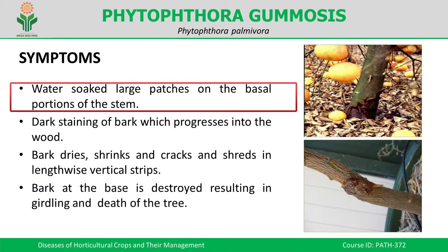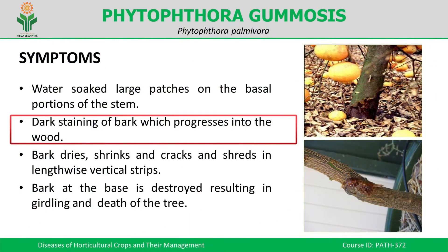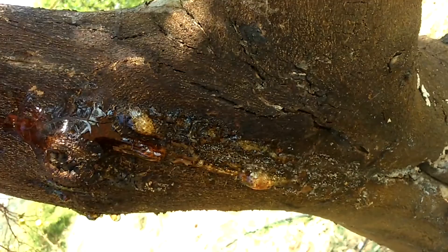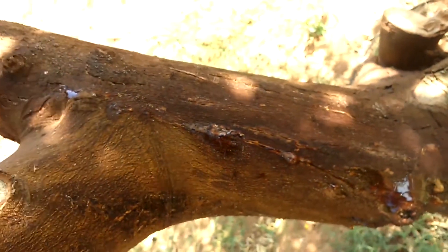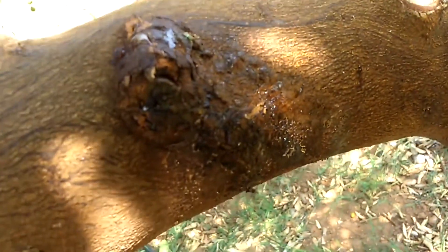The first diagnostic feature is the water-soaked appearance at the basal portion of the stem. The importance of this basal region should be underlined. Unlike other gummosis, the characteristic feature of Phytophthora gummosis is the occurrence of water-soaked lesions at the basal portion of the stem. The second point is there will be dark staining of the bark which progresses into the wood — not only confined to the outer layer but penetrating inside the wood. Finally, the bark dries and shrinks due to loss of moisture, cracks, and shreds into vertical longitudinal strips.